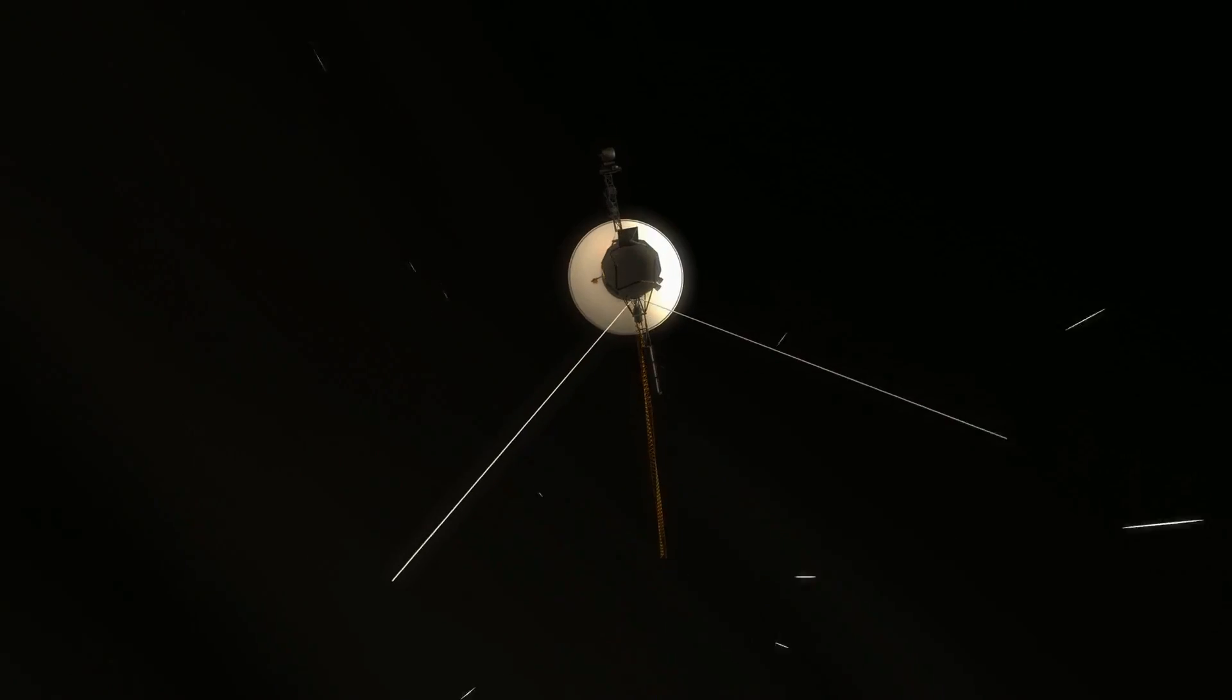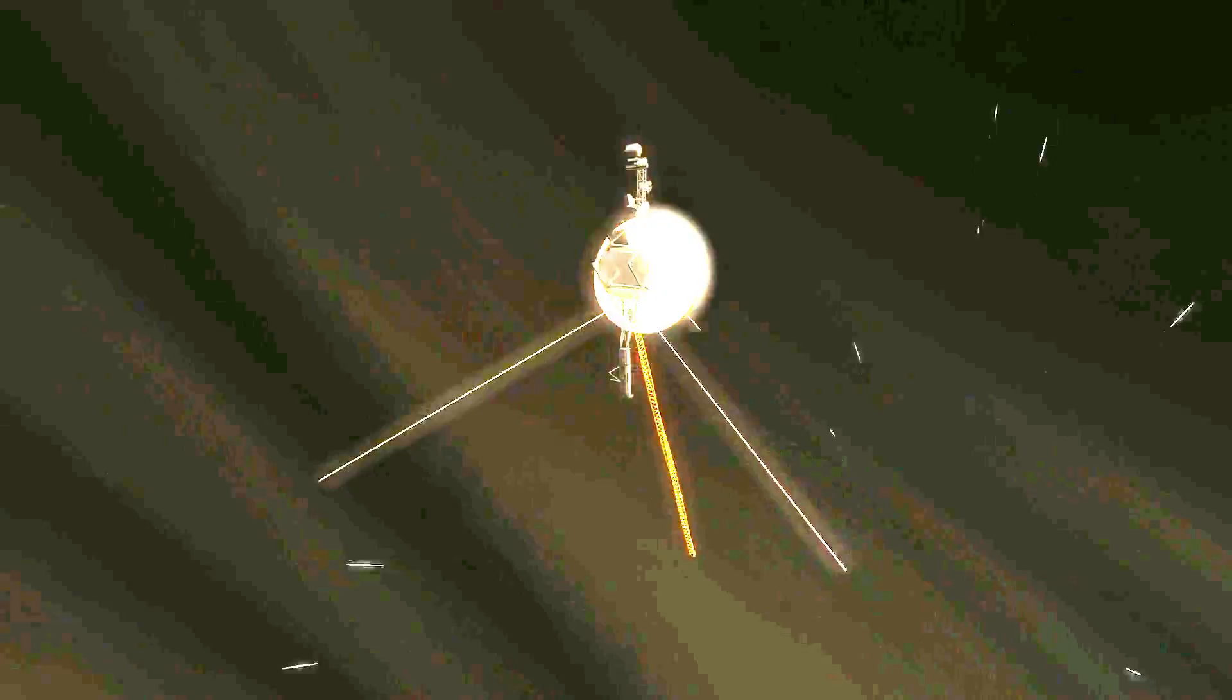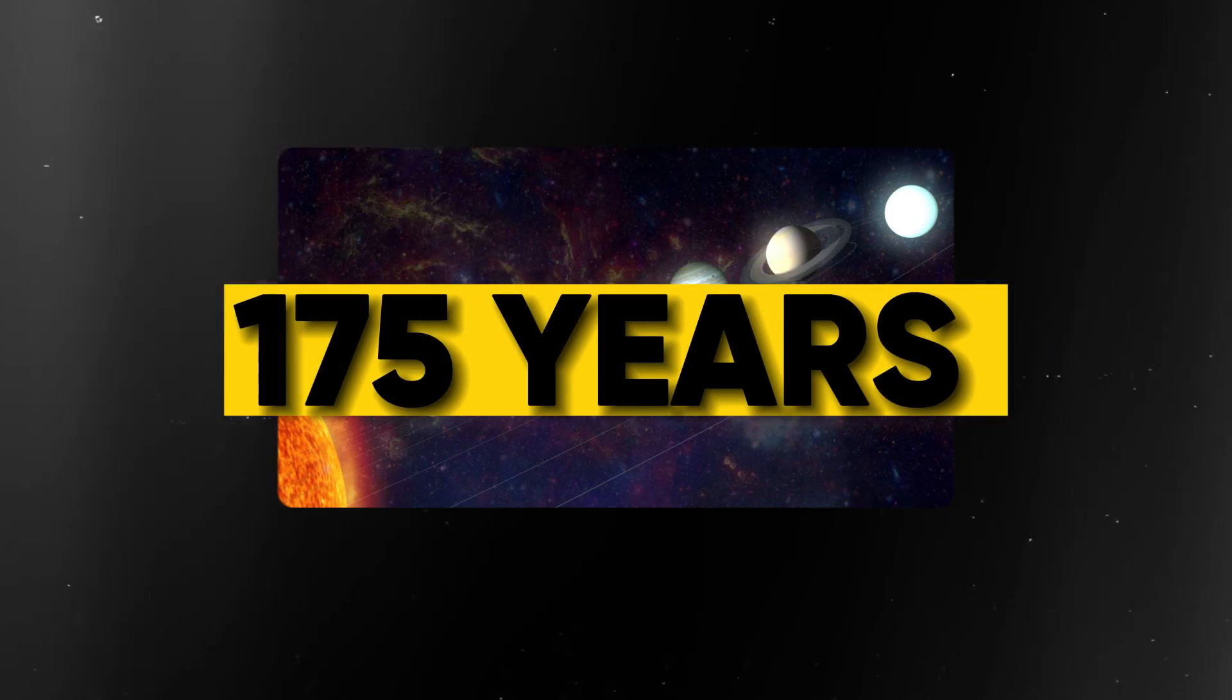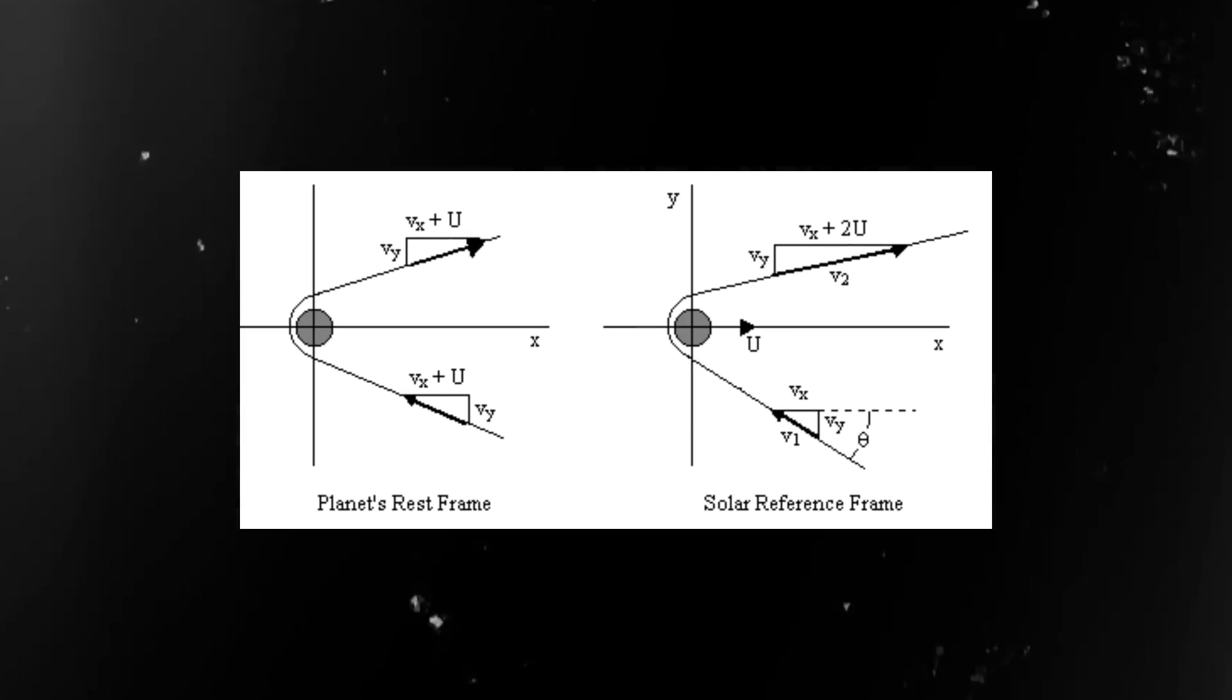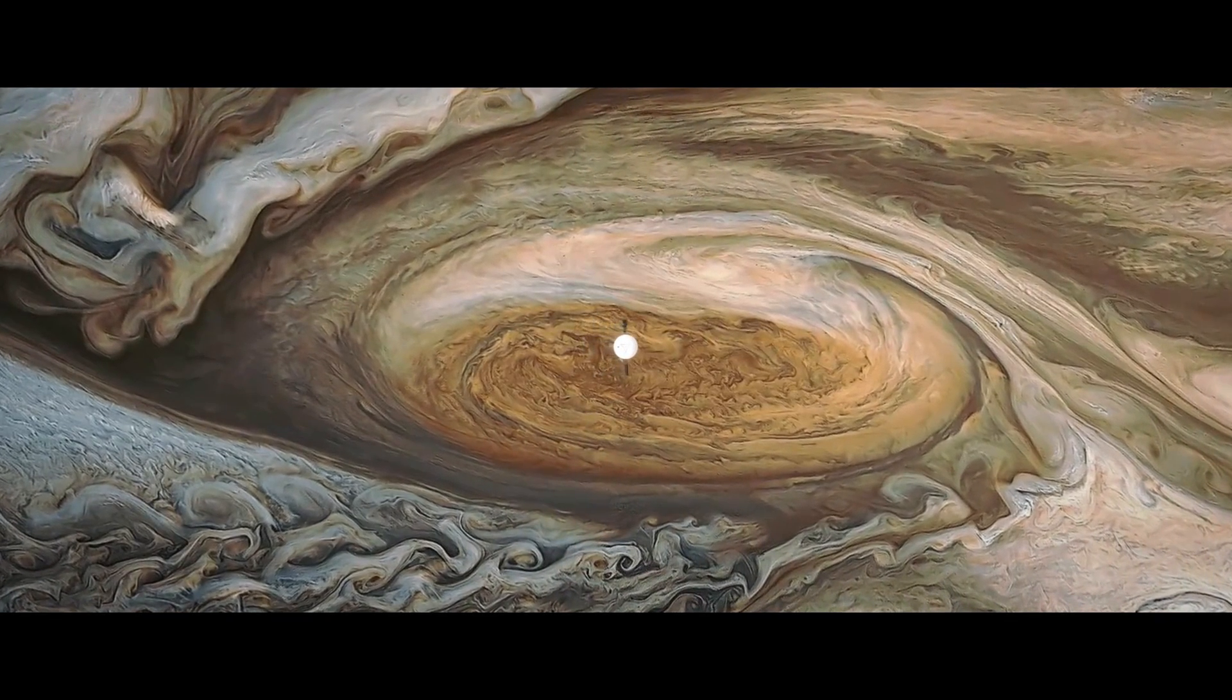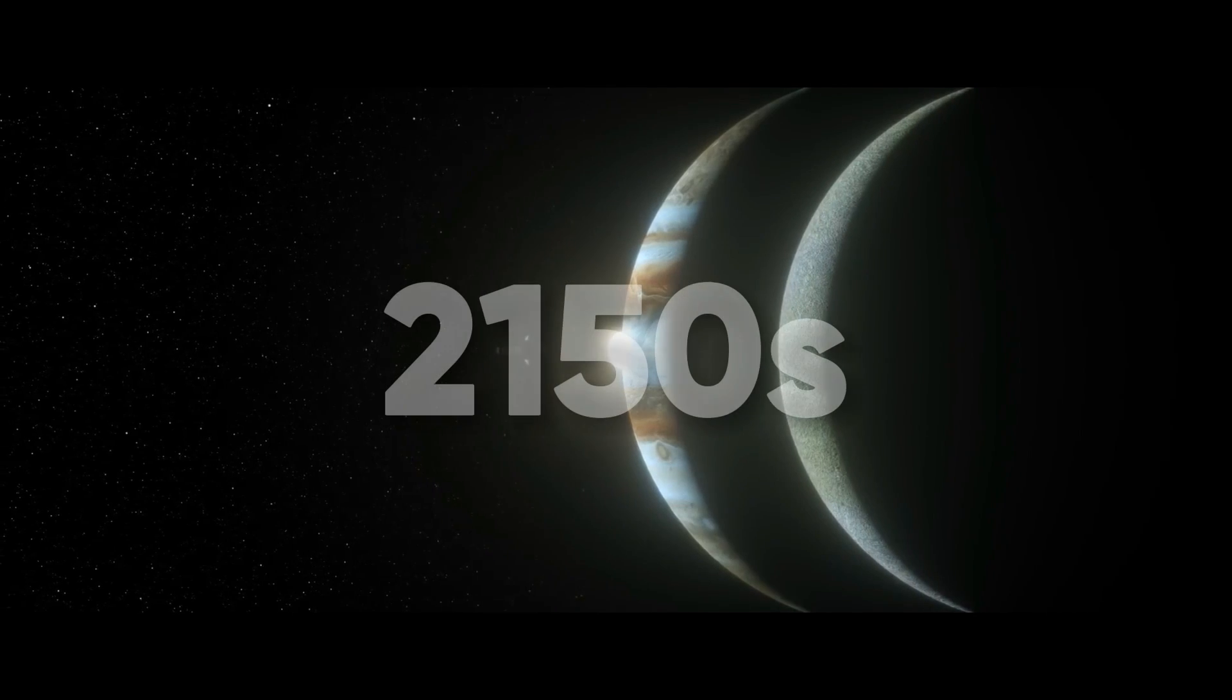Secondly, the Voyager missions were designed to take advantage of a unique planetary alignment that occurs only once every 175 years. This alignment allowed the spacecraft to use a gravitational slingshot effect to visit multiple planets and moons. It was not expected to occur again until the 2150s.